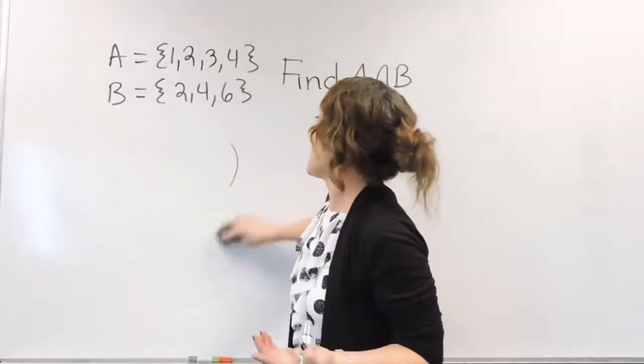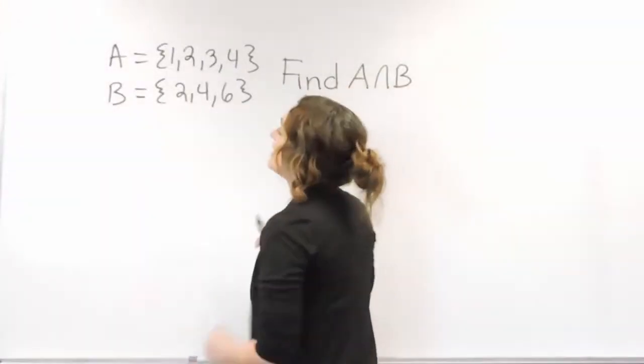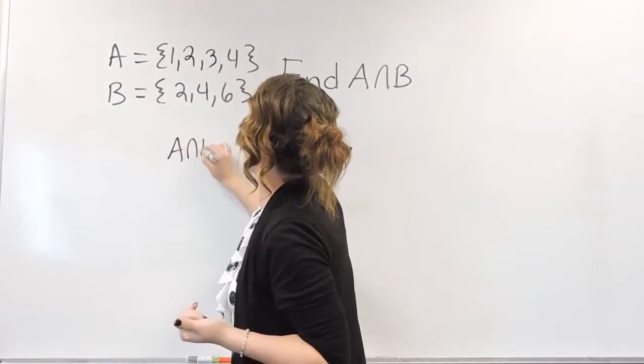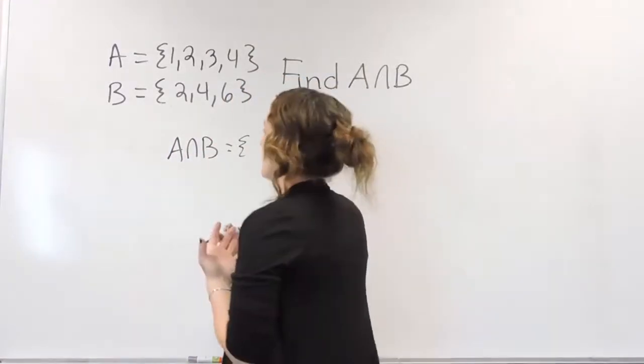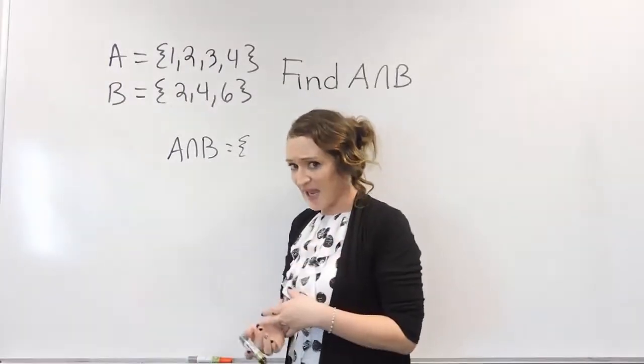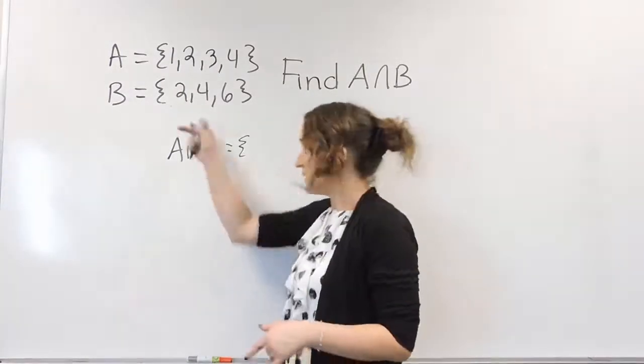So if I'm looking at set A and set B here, the intersection of A and B is only the things they have in common. What do I have in A that is also in B?